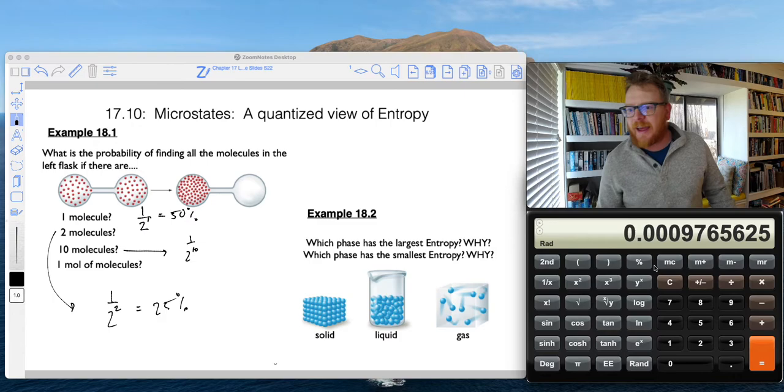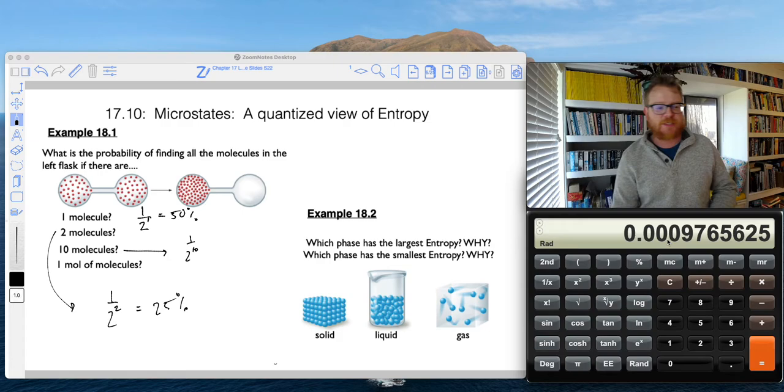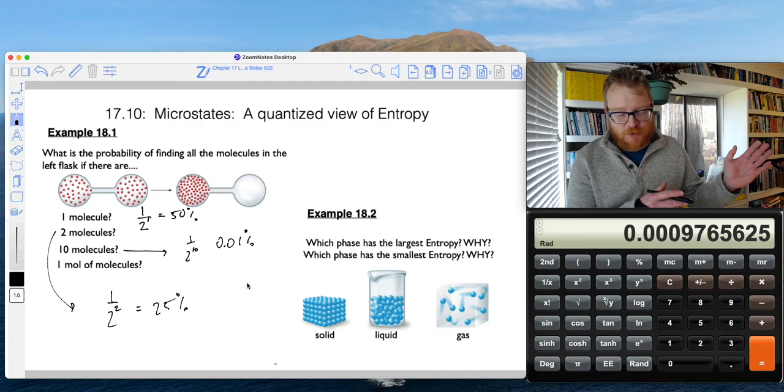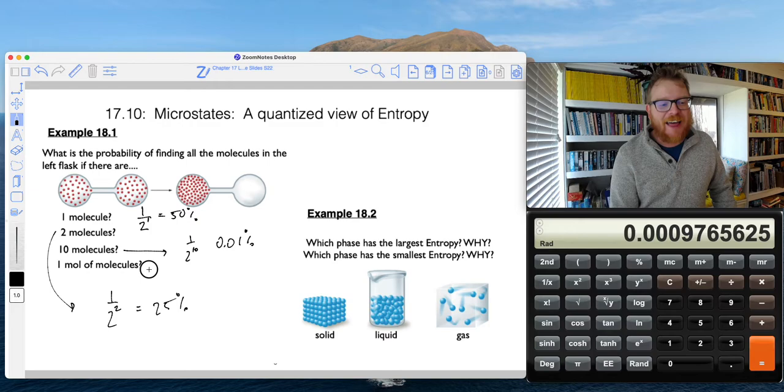And now if I do one over that number, one over two raised to the power 10, I get some crazy small percent. That would be like, you know, 0.01% chance that I would find all 10 of those molecules all of a sudden at the other side.